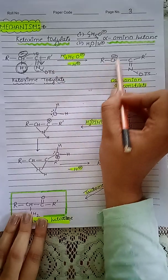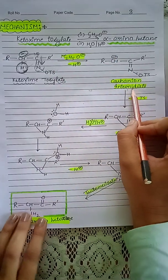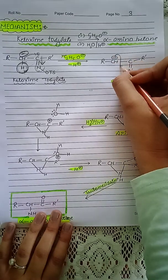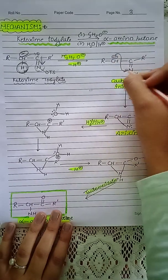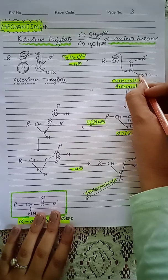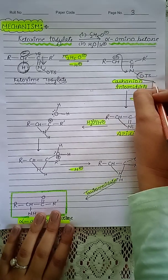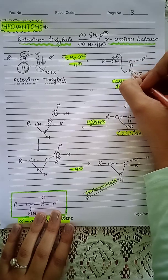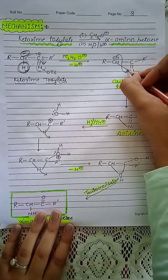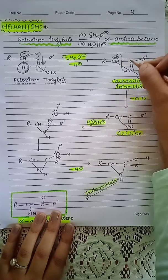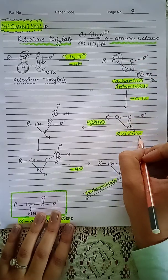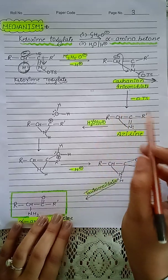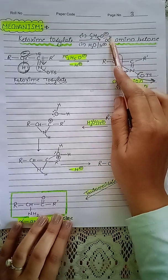The base abstracts this acidic hydrogen, and this carbon acquires a negative charge, giving us the carbanion intermediate. These electrons then attack the nitrogen, and since the tosylate is a good leaving group, it leaves. When the electrons attack the nitrogen, we get a three-membered heterocyclic ring which is called azirine.